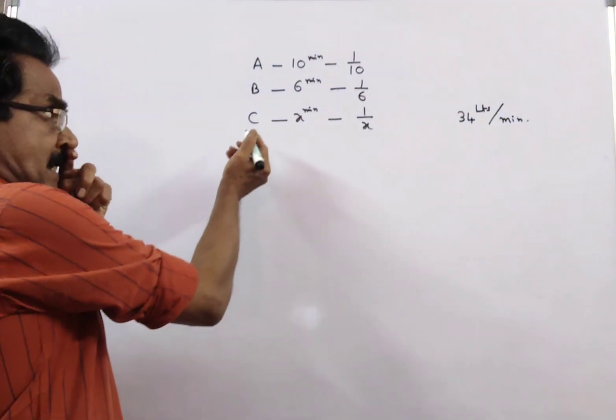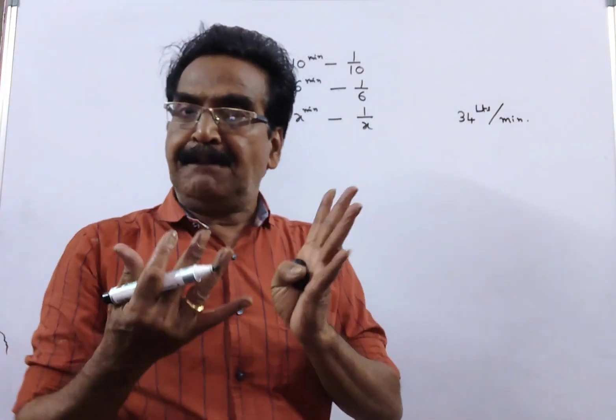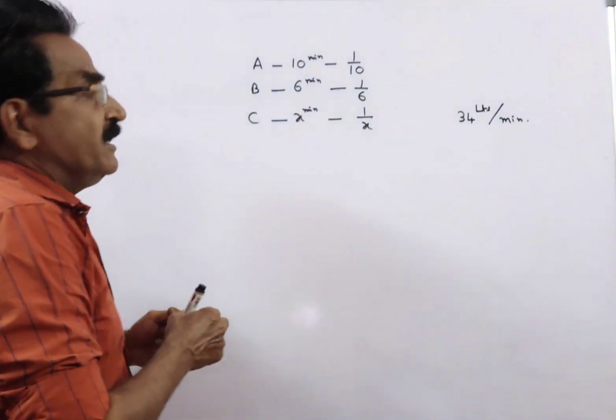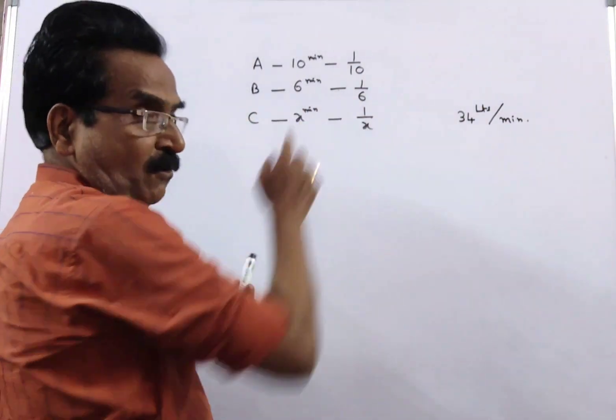See friends, say pipe C can empty a full tank in X minutes. So, the work done by pipe C is equal to 1 by X.